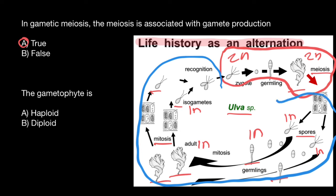So this diploid entity here we call the sporophyte, and the haploid adult entity here we call the gametophyte. As you see, gametophytes are haploid — answer A. And this is all for today. Subscribe and see you in the next video. Goodbye.